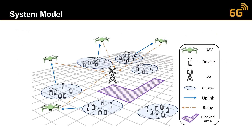We have a scenario where multiple UAVs serve multiple limited-power IoT sensors in an IoT network. There is one base station in the middle, and a blocked area where UAVs are restricted from entering. The base station, acting as the central unit, performs clustering — grouping devices by location — so each UAV can serve one cluster and all of its sensors at a time.